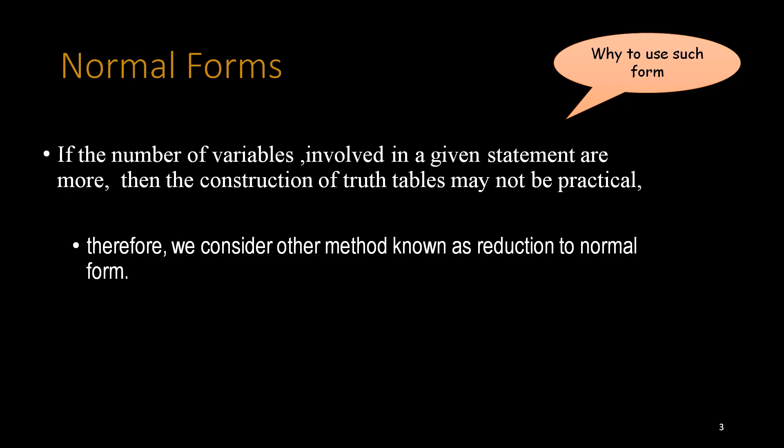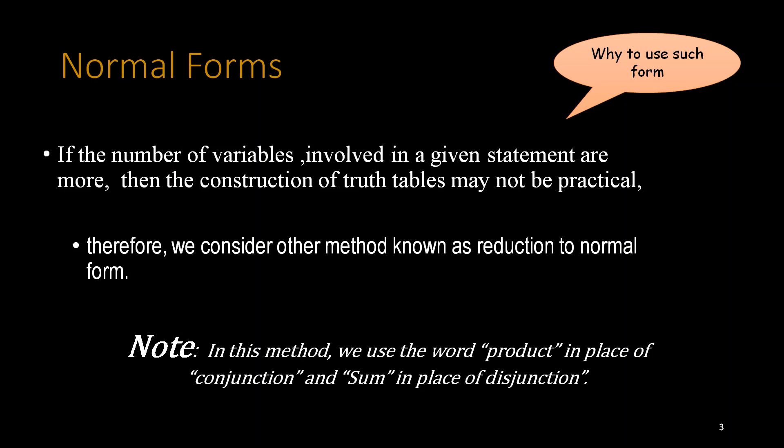Therefore, we consider other methods known as reduction to normal form. Note: in this method we use the word product in place of conjunction and sum in place of disjunction. Product means AND, and sum means OR.